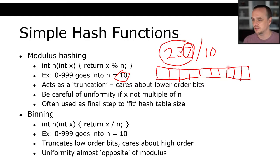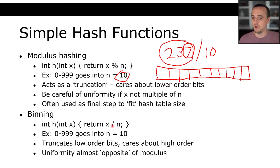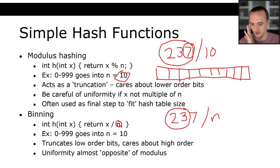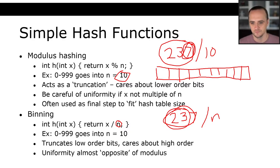Similarly, we could do binning — another type of hashing where instead of taking a modulus we use integer division. Modulus is the remainder; integer division is how many whole times a number goes into another. For example, 237 divided by 10 gives 23. Binning truncates the lower bits instead of the upper bits. Those are two very simple hash functions for turning integers into other integers.